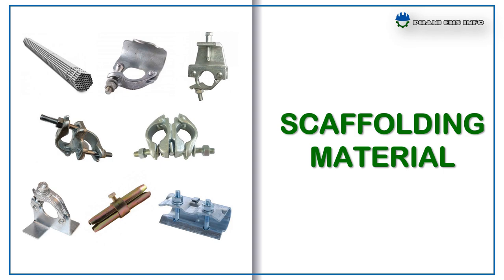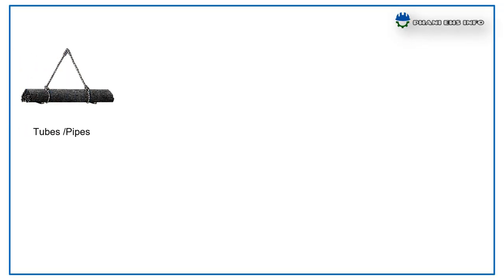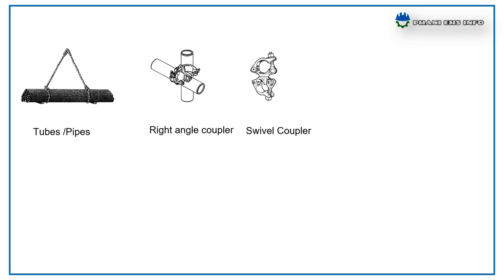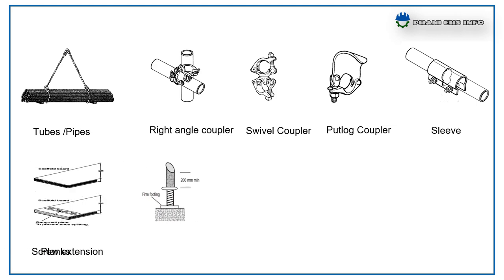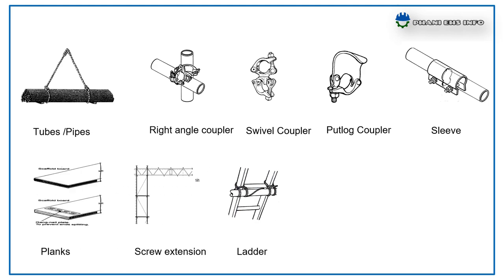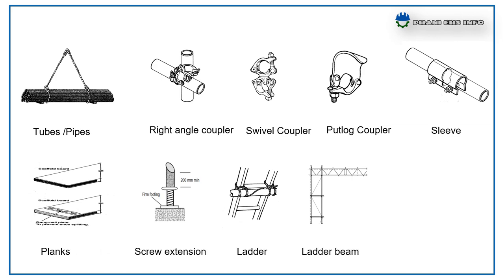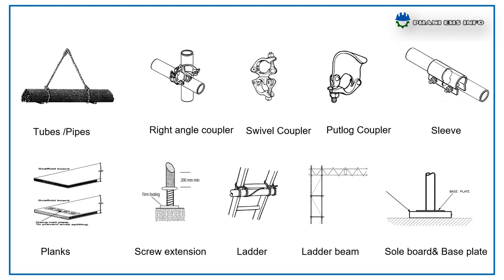What are the materials used for scaffolding? Tubes or pipes, right angle coupler, swivel coupler, putla coupler, sleeve, planks, screw extensions, ladder, ladder beam, soulboard and base plate are the common materials used for erecting a scaffold.